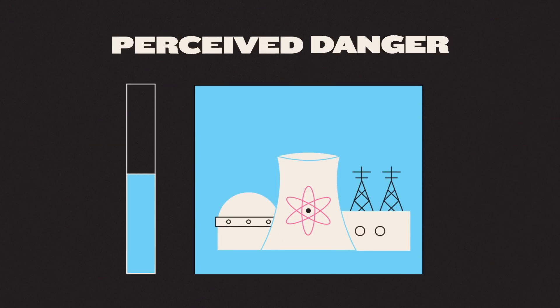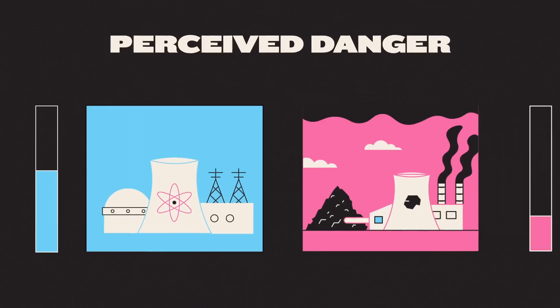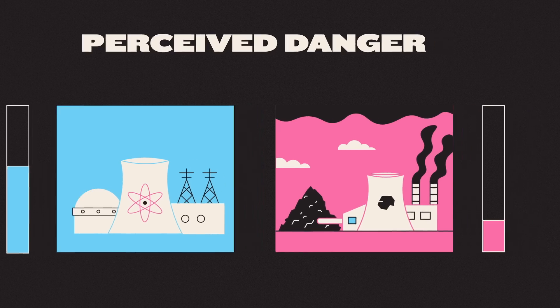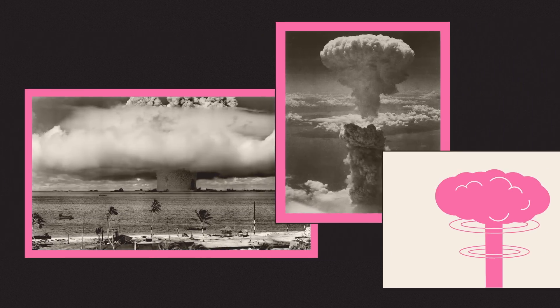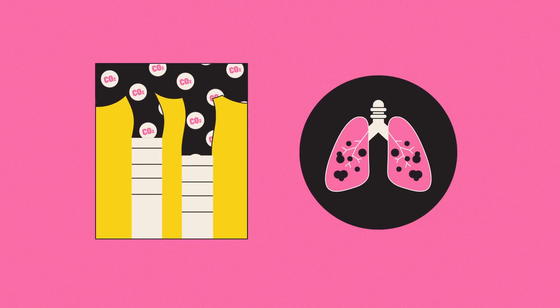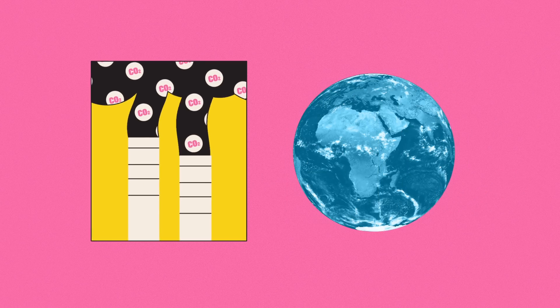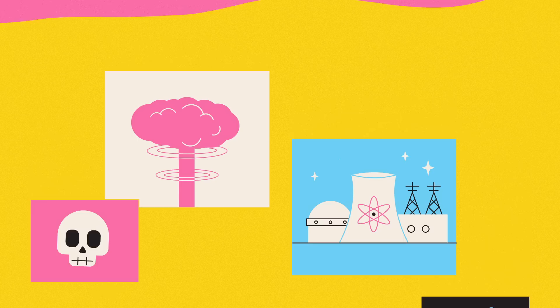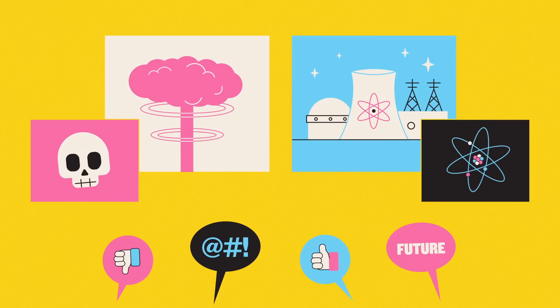But atomic advocates argue that we tend to overestimate its dangers while underestimating those of fossil fuels. Perhaps because images of mushroom clouds are seared into our collective memory, and are easier to imagine than the slow, invisible choking of our lungs and planet, nuclear power hits people at gut level and creates political heat.